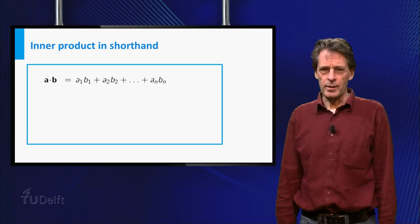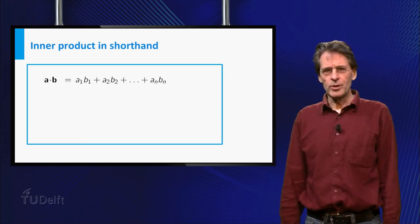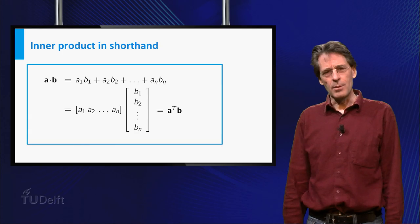This can be written in a very concise way. The sum of the products is equal to the transpose of a times the vector b.